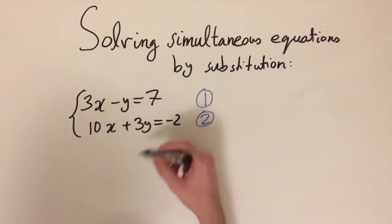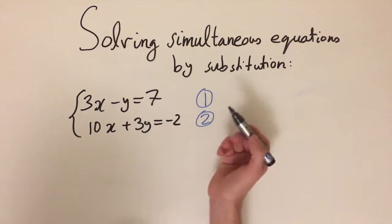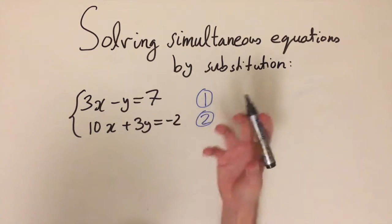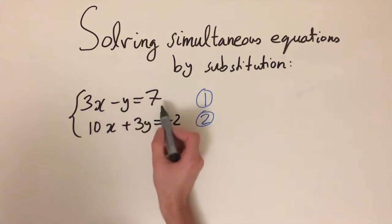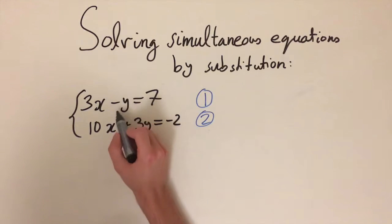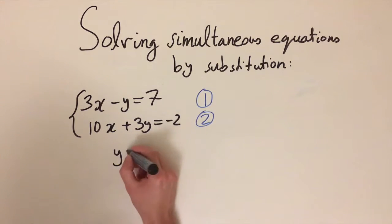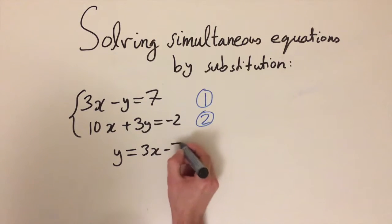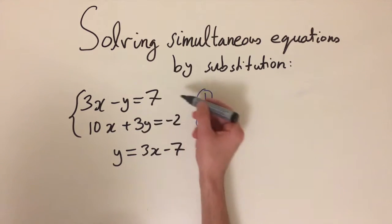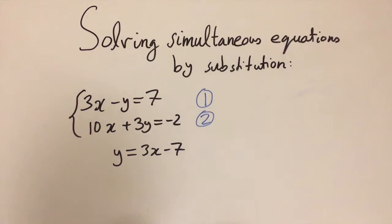Just like before, we want to isolate one of these variables, x or y, as a function of the other one. Here we can see in equation 1 that we only have a coefficient of 1 in front of y, so this is going to be the simplest to rearrange for. We can move the y onto that side, and if we do that we'll get y equals 3x minus 7. This is just rearranging equation 1, so it's still equivalent to it. Let's label this as equation number 3.